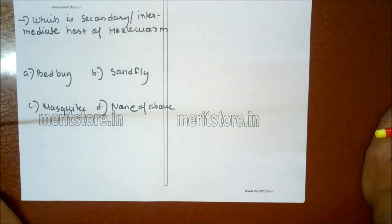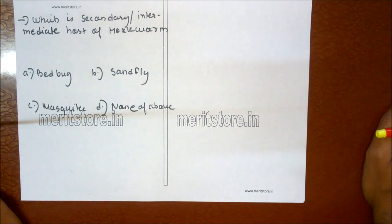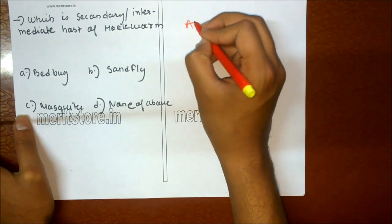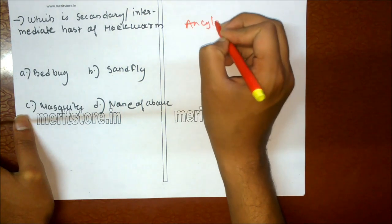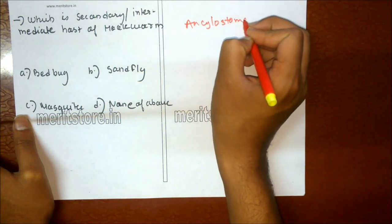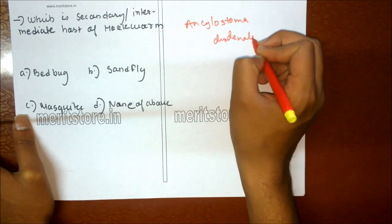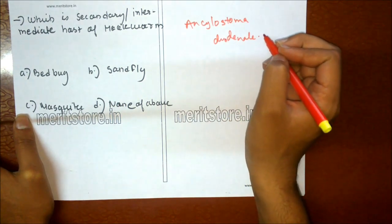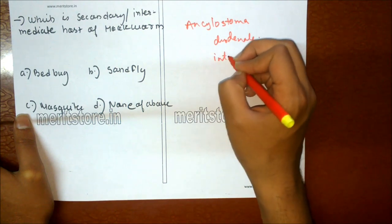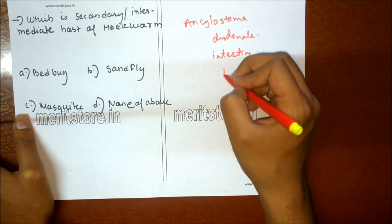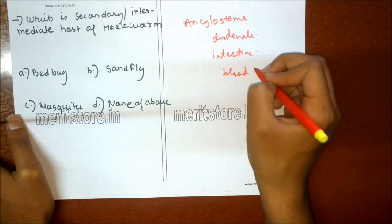Which is the secondary or intermediate host of hookworm? A bedbug, B sandfly, C mosquito, D none of the above. Hookworm — Necator or Ancylostoma duodenale — lives in the intestine of man and feeds upon blood. There is no secondary host. Option D is the correct answer.